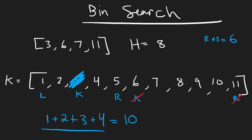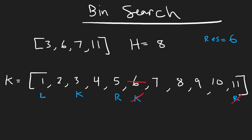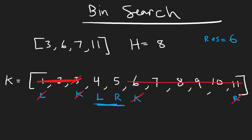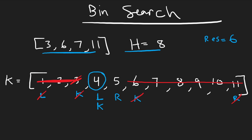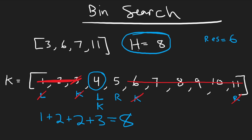Since k=3 failed, we shift the left pointer to k+1=4. We compute (4+5)/2=4, so we try k=4. First pile: 1 hour. Second pile: 2 hours. Third pile: 2 hours. Fourth pile: 3 hours. Total: 8 hours — within the threshold. So we update our result from 6 to 4.